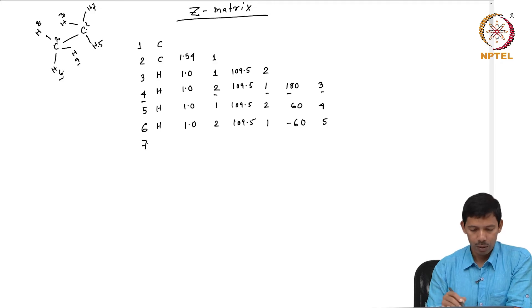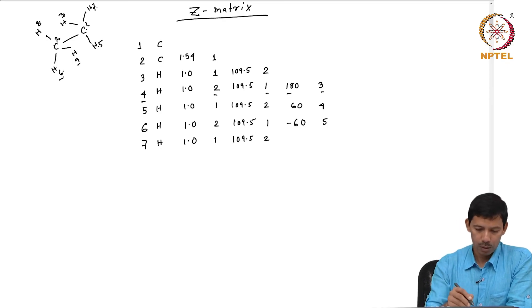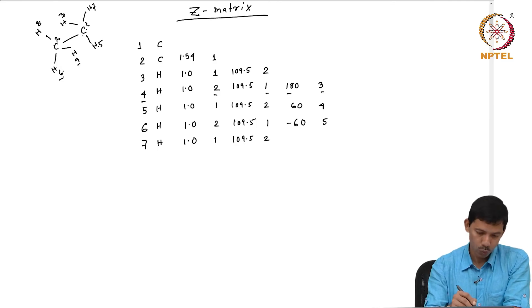Atom 7 forms a bond with 1 of value 1.0. 7, 1, 2 forms an angle of 109.5 and 7, 1, 2, 6 forms a dihedral, and that is 180.